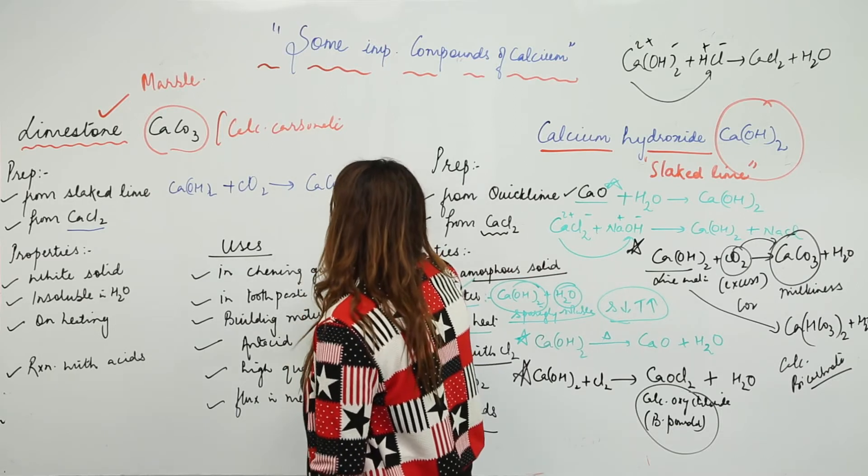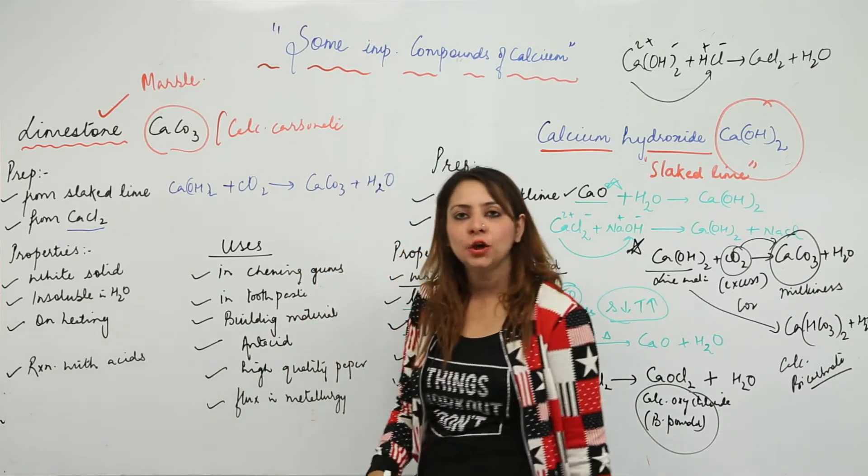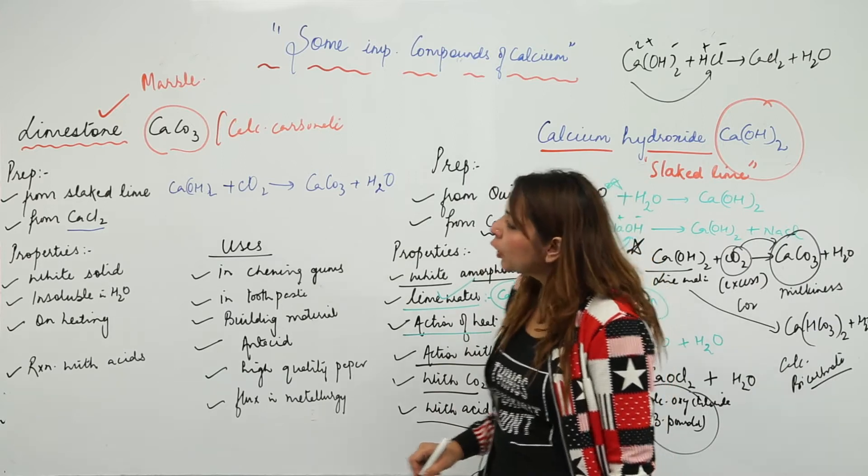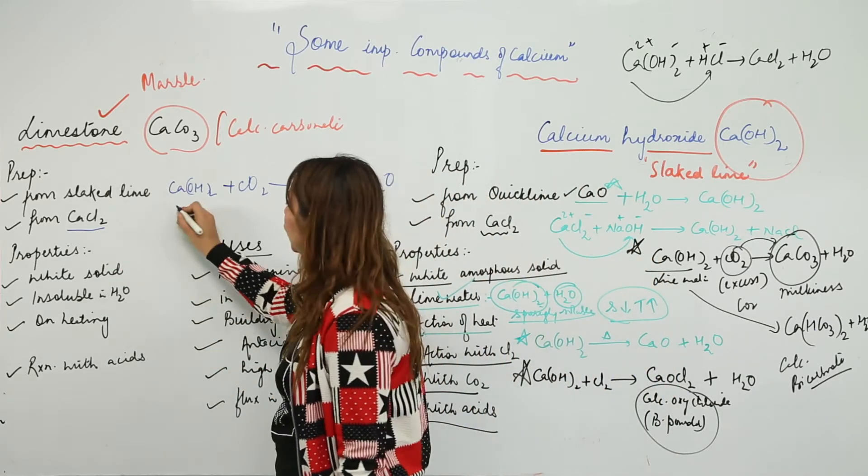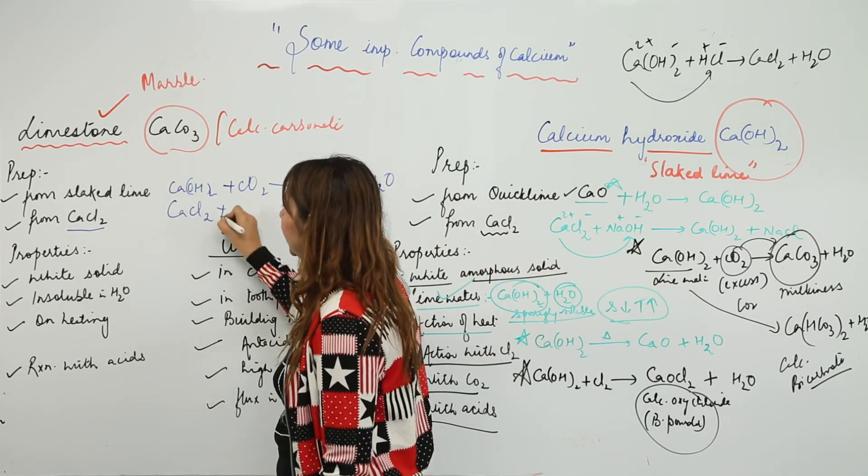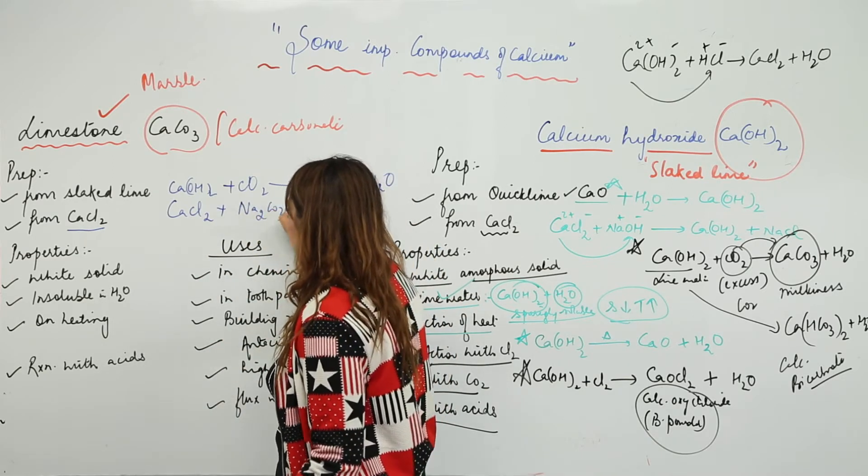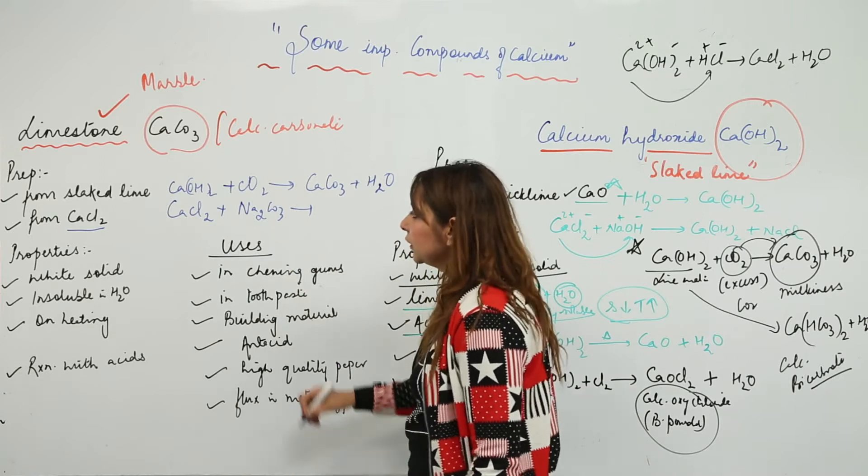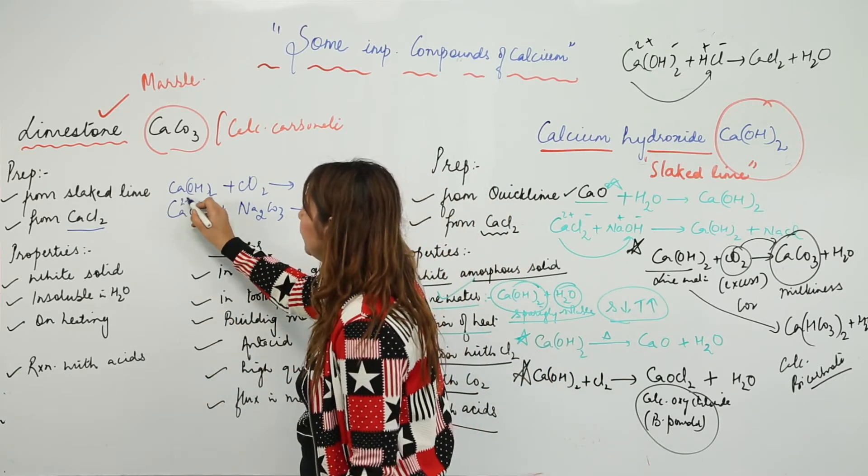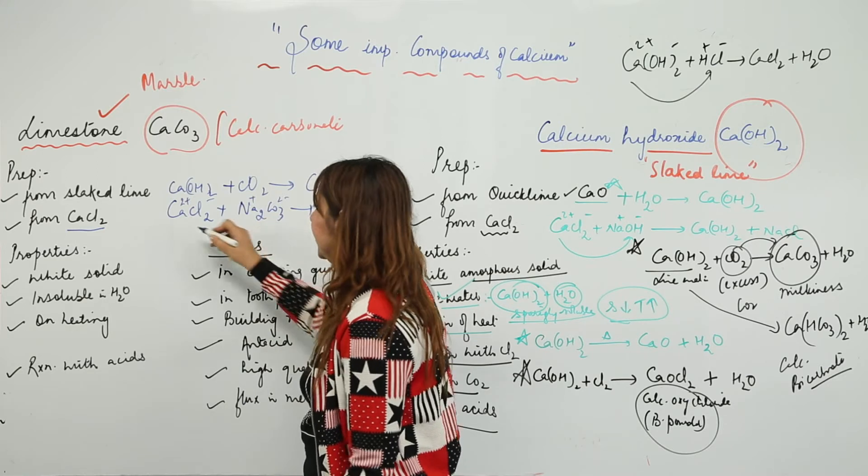We can prepare it from calcium chloride also. We have calcium chloride, and we need to add sodium carbonate. You can do this reaction by using making use of valencies.